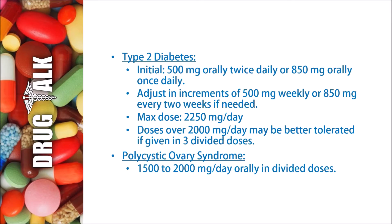Metformin is administered orally. For type 2 diabetes, the initial dose is typically 500 milligrams orally twice daily or 850 milligrams orally once daily. The dose can be adjusted in increments of 500 milligrams weekly or 850 milligrams every two weeks if needed. The typical maximum dose is 2,250 milligrams per day, and doses over 2,000 milligrams per day may be better tolerated if given in three divided doses.